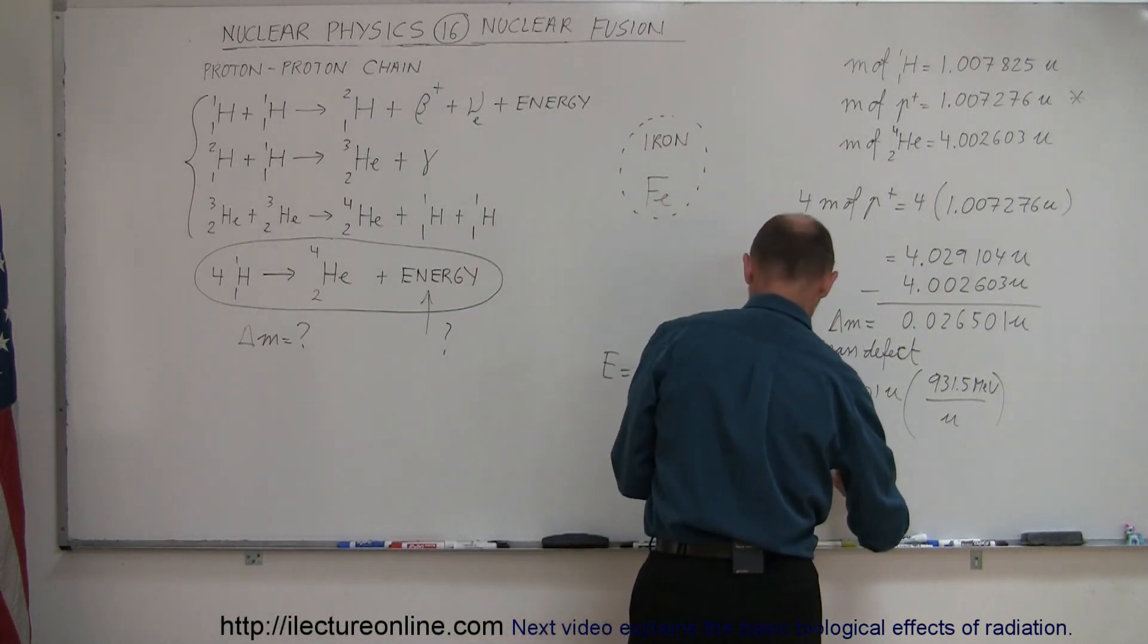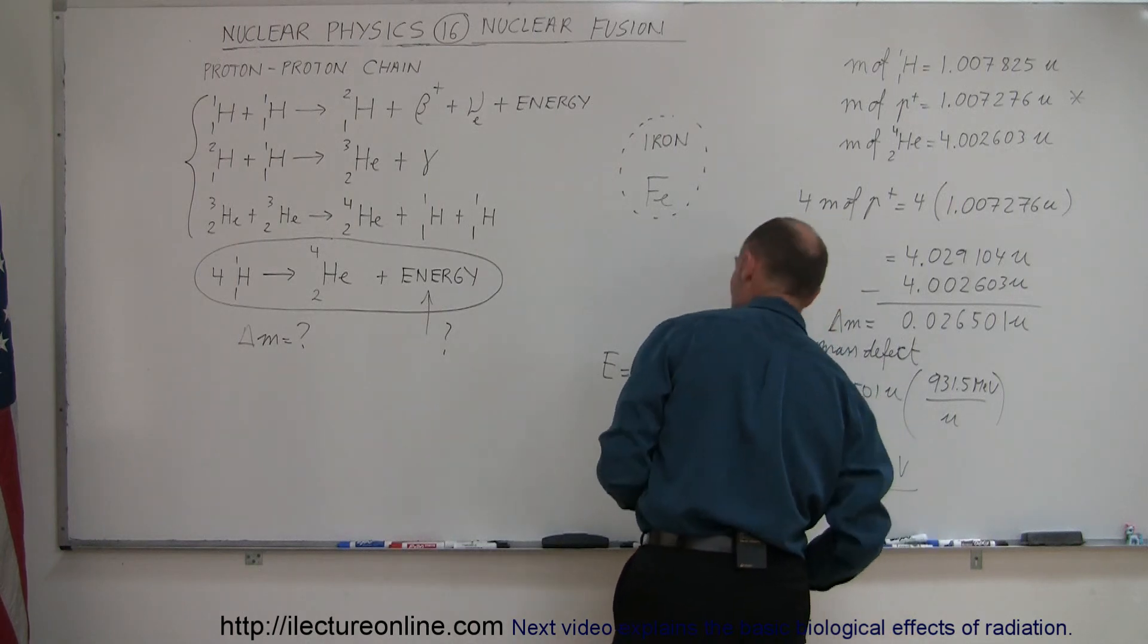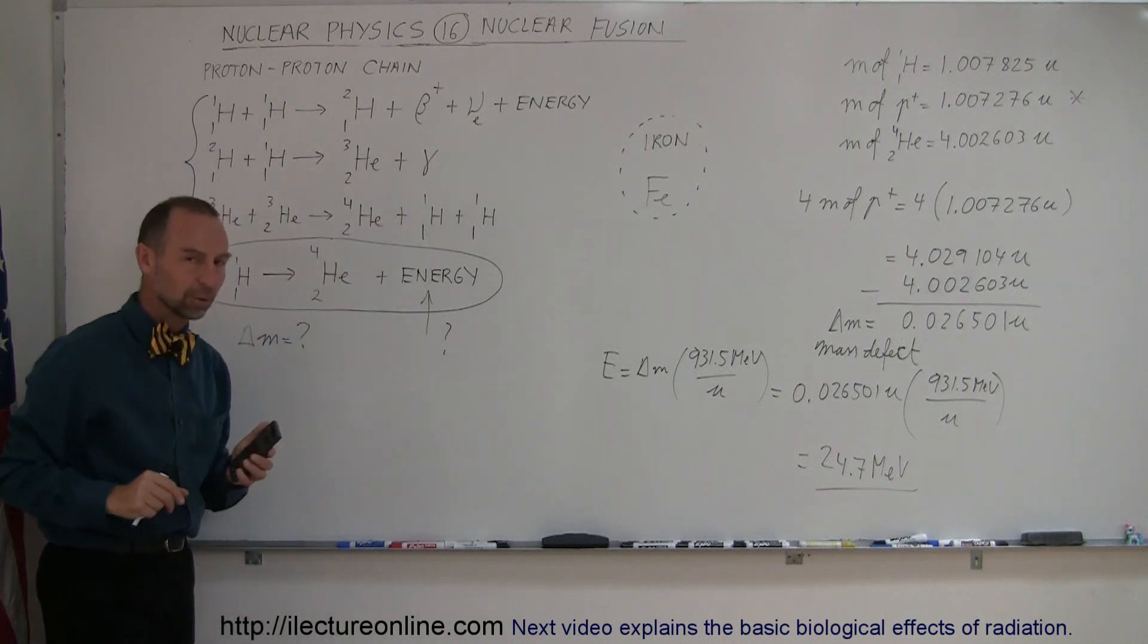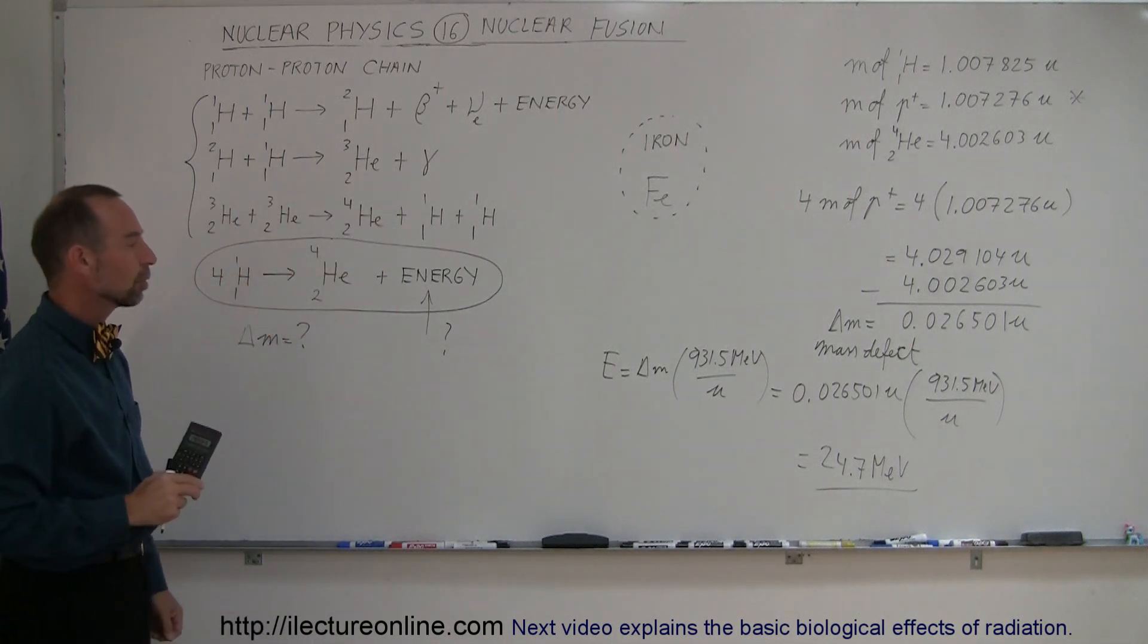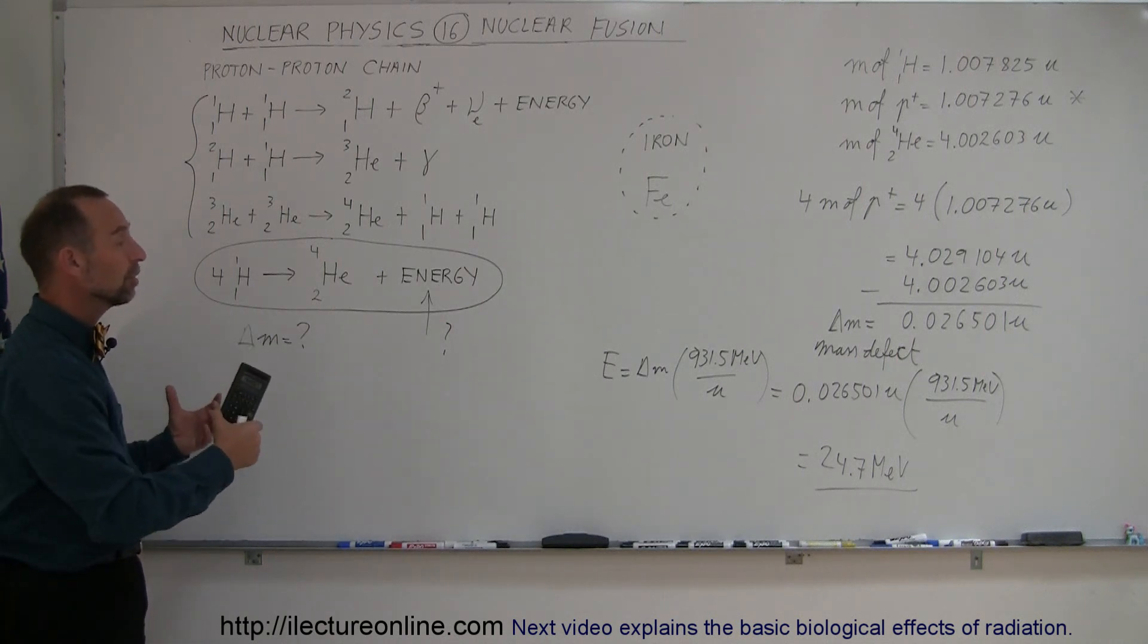It releases 24.7 MeV each time four hydrogens are slammed together through a set of processes called the proton-proton chain into a helium nucleus. That produces an enormous quantity of energy, and that is what fuels the energy from stars.